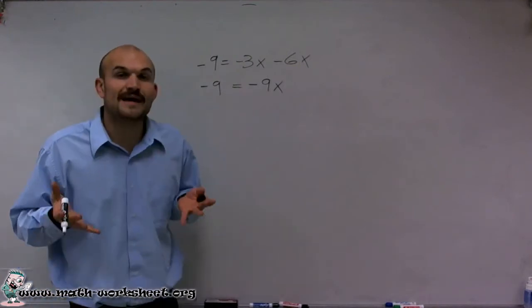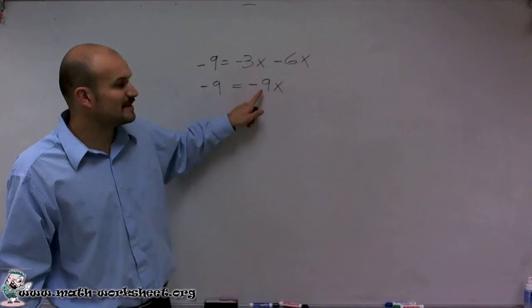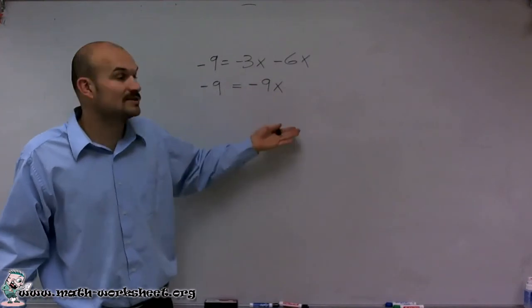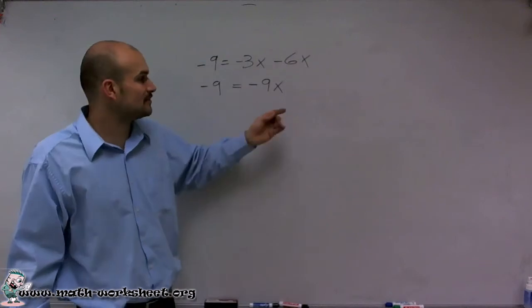Now what I need to do is use inverse operations to solve for x. What I notice is my variable is being multiplied by negative 9. To isolate the variable, to get it by itself, I have to undo what's happening to it.